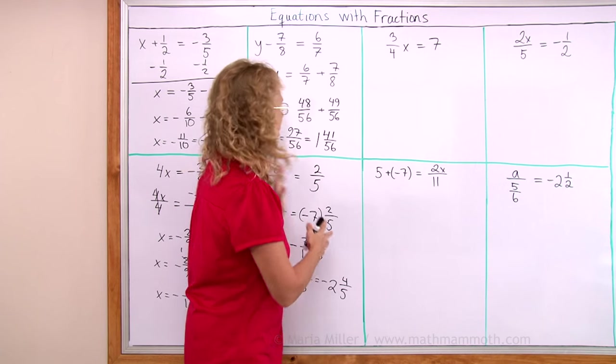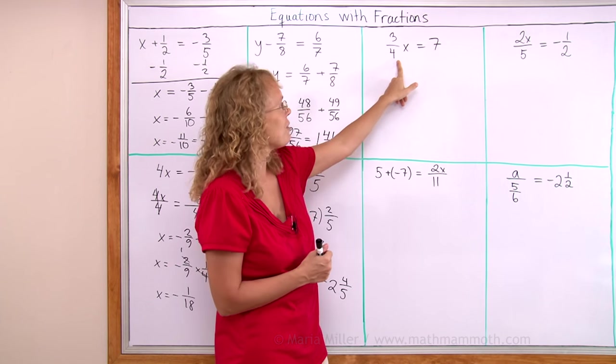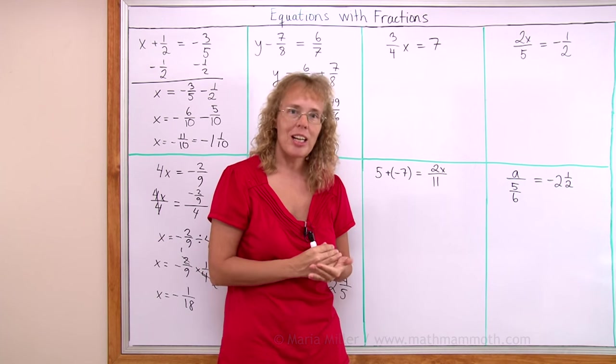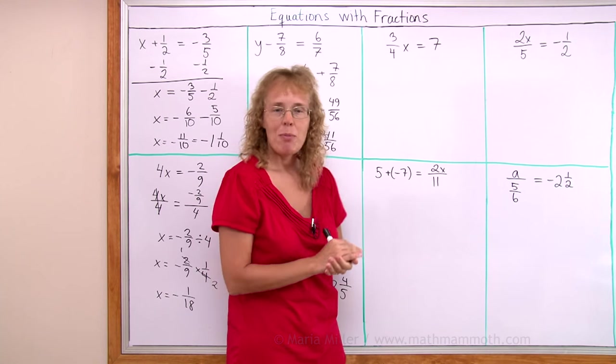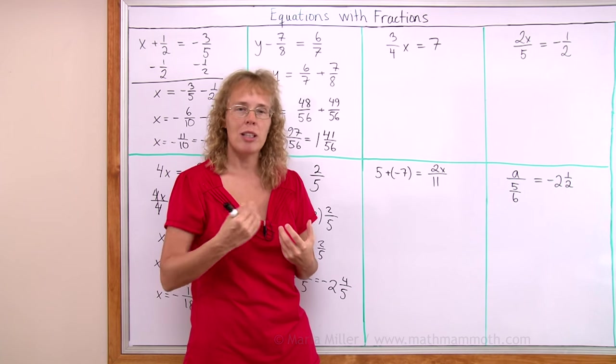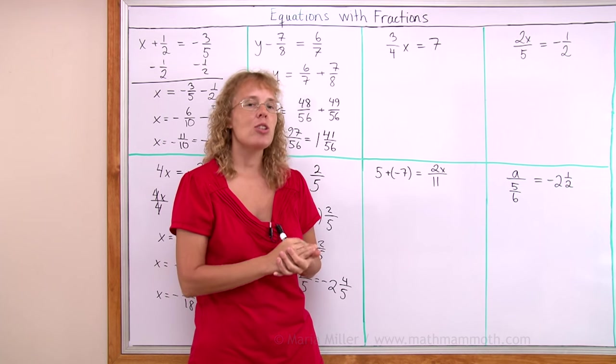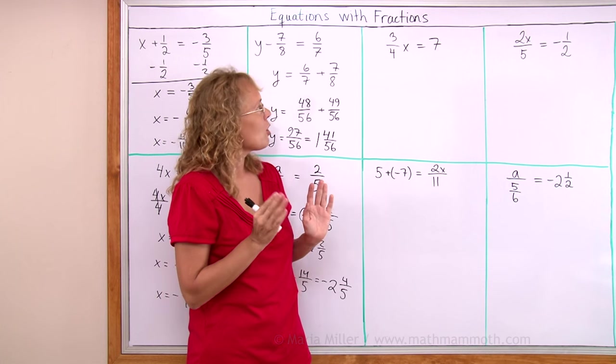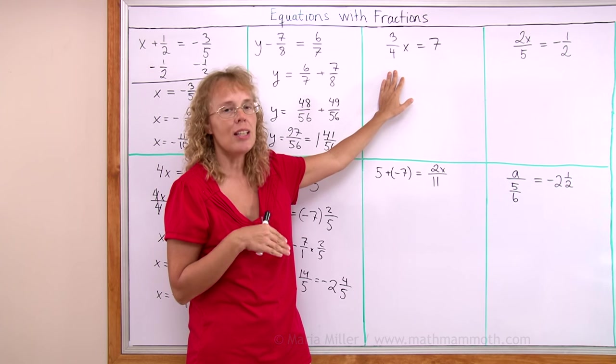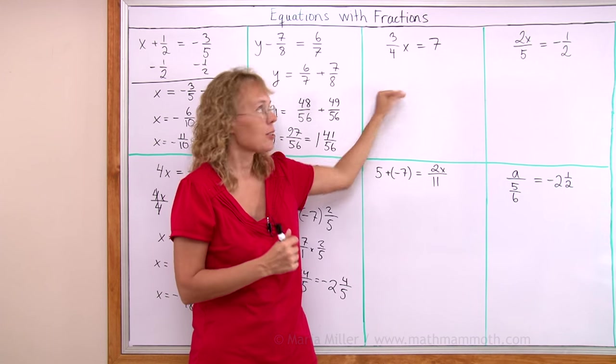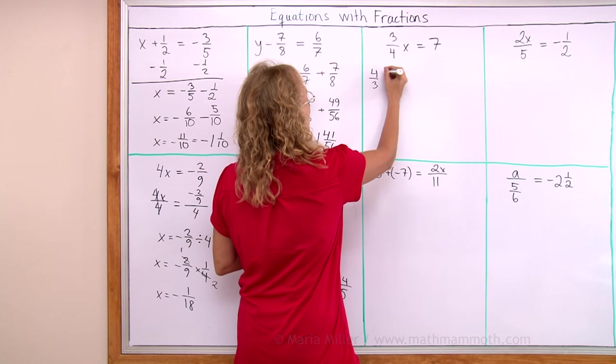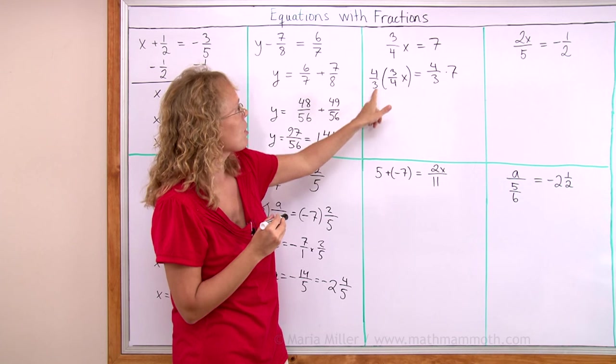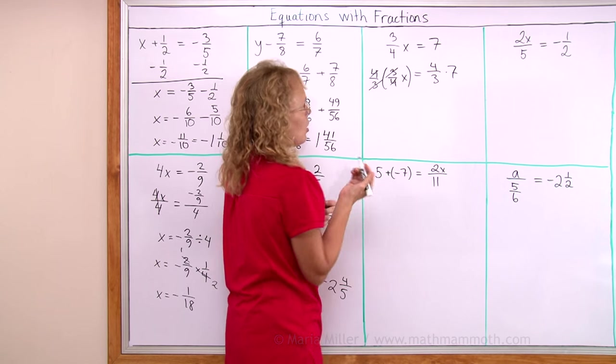This one here is a little bit different because now the variable is multiplied by a fraction. It is a multiplication equation again so we can solve it by dividing both sides by this fraction. However remember that when you divide by a fraction you always have to change that into a multiplication. If you divide by 3 fourths, you have to multiply by 4 thirds. In this equation I will just go straight to multiplying by 4 thirds. So we have 4 thirds times 3 fourths times x and then 4 thirds times 7 on this side. Over here the 3s and 4s cancel so x is left alone.